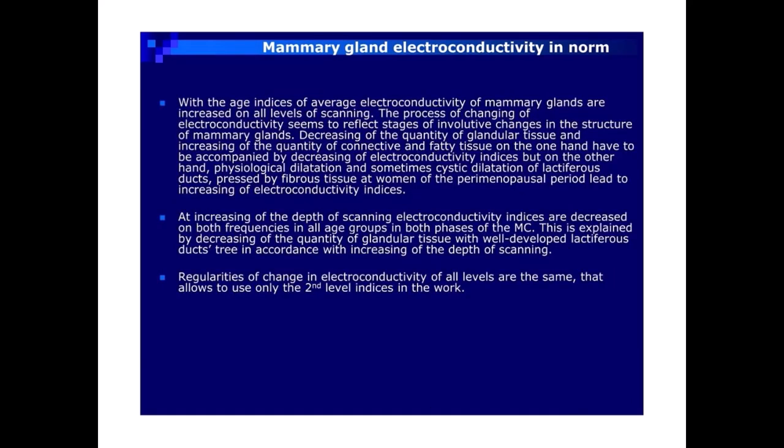With age, indices of average electroconductivity of mammary glands are increased on all levels of scanning. The process of changing electroconductivity seems to reflect stages of involutive changes in the structure of mammary glands. Decreasing of the quantity of glandular tissue and increasing of connective and fatty tissue should decrease electroconductivity indices, but physiological dilatation — and sometimes cystic dilatation — of lactiferous ducts pressed by fibrous tissue in women of the perimenopausal period leads to increasing of electroconductivity indices.